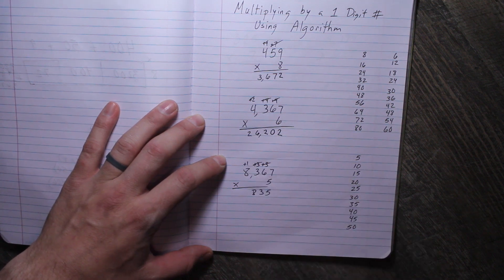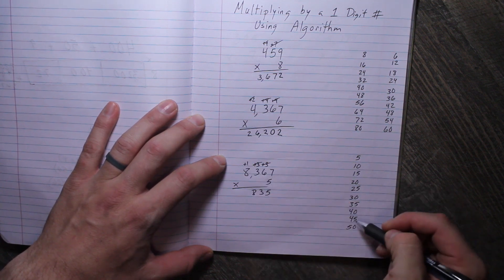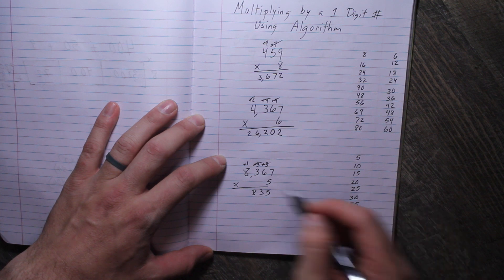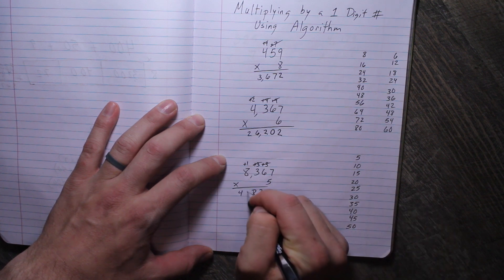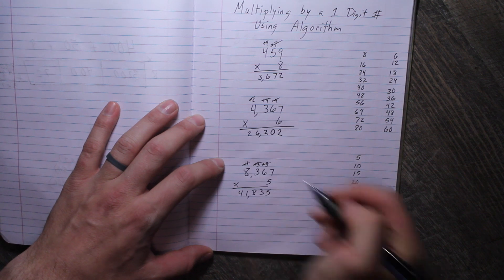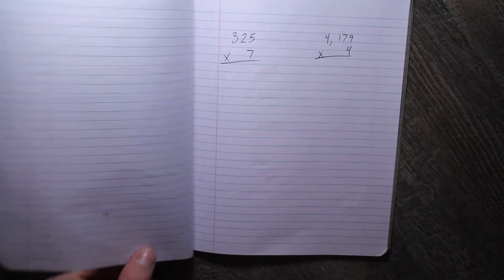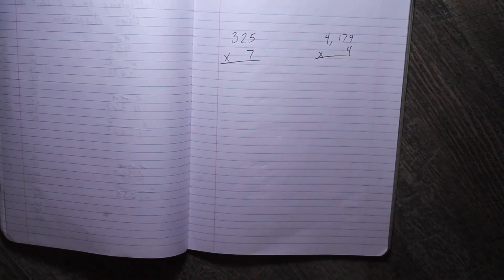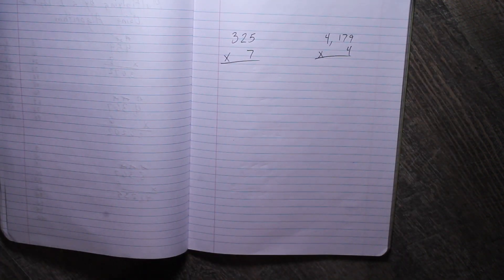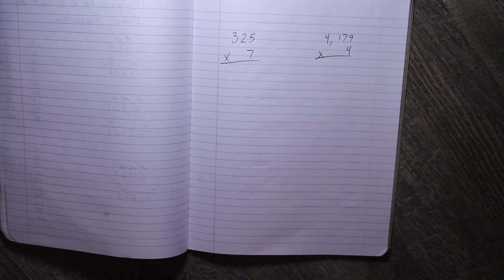Cross that one out. And 5 times 8 is 40, plus 1 is 41. Now if you feel like you don't have it yet, that's okay—it'll just take some practice, and we're going to keep going on these. So what I want you to try to do on your own are these two problems: 325 times 7 and 4,179 times 4.